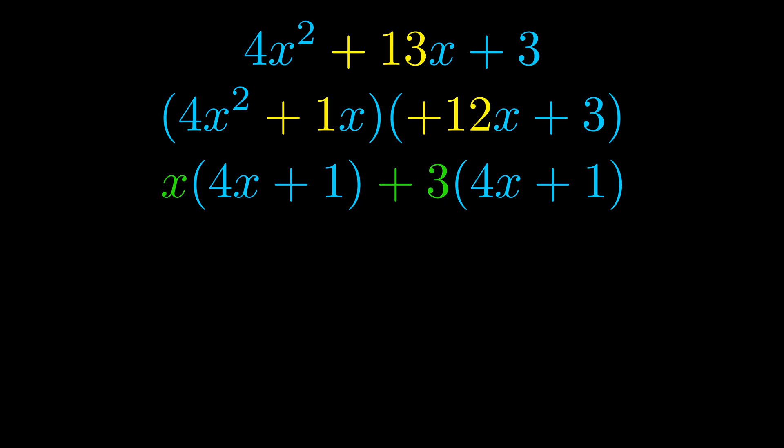Notice also how what remains inside of the parentheses is the same in both cases. The blue values are the same. Those blue values will become one of our factors and we will combine the two green values, the GCFs that we pulled out, to get the other one. And that is our fully factored equation.